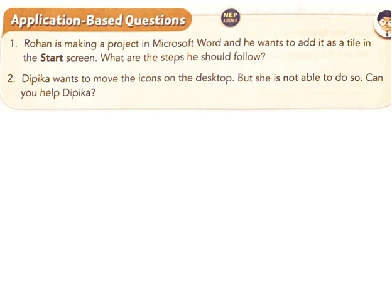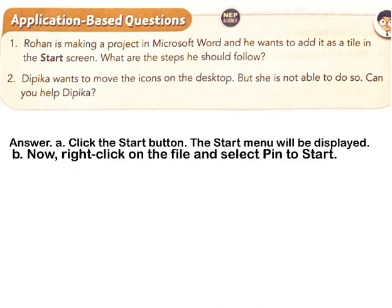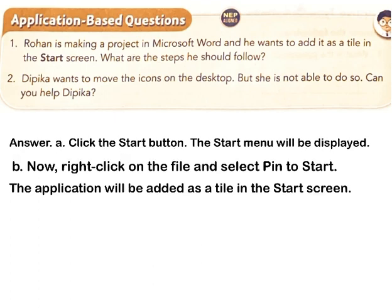Application-based questions. Question 1: Rowan is making a project in Microsoft Word and wants to add it as a tile in the start screen. What steps should he follow? Answer: A) Click the Start button; the Start menu will be displayed. B) Right-click on the file and select Pin to Start. The application will be added as a tile in the Start menu.